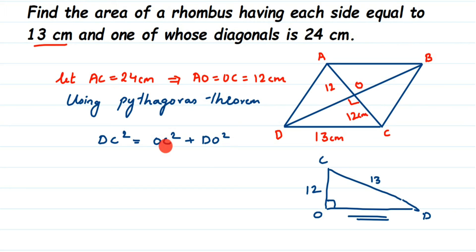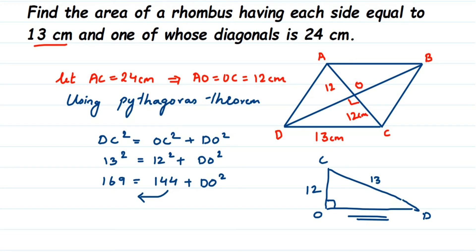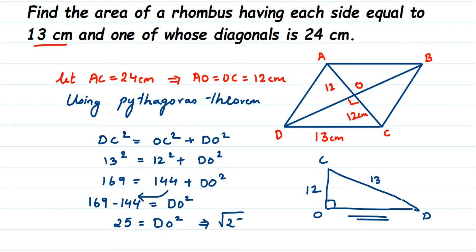Substituting the values: 12² + DO² = 13². So 144 + DO² = 169. Transposing 144 to the other side: DO² = 169 − 144 = 25. Taking the square root of both sides: DO = √25 = 5 centimeters.